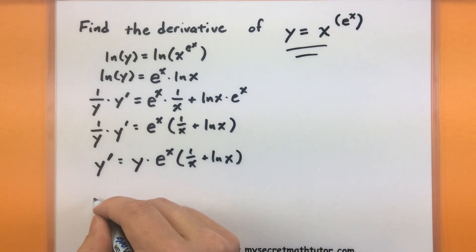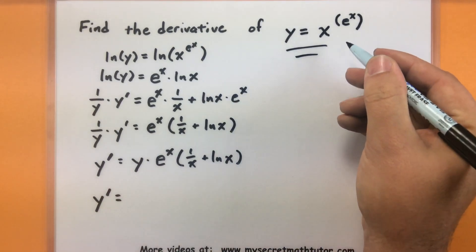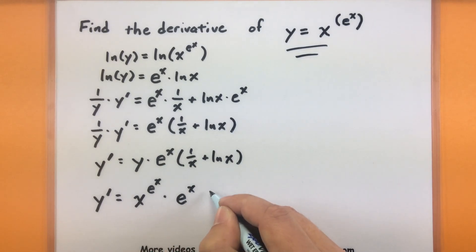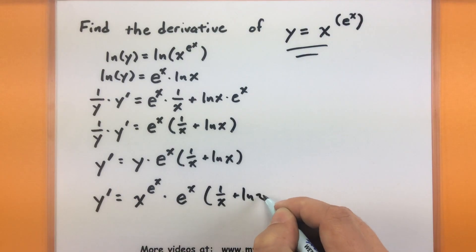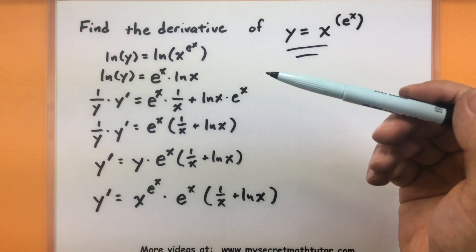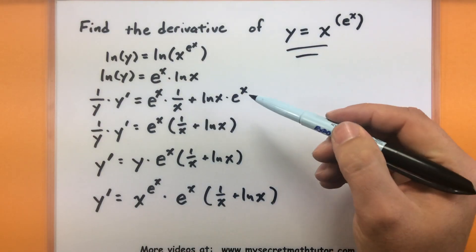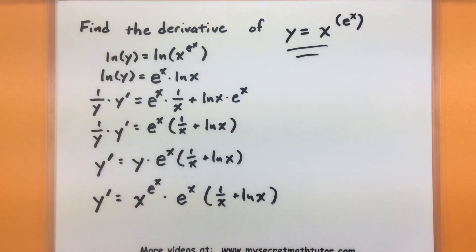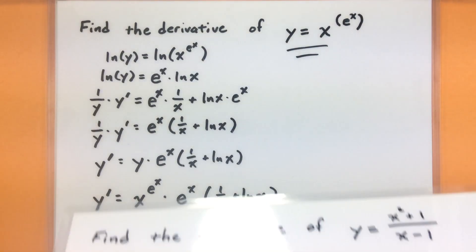So y prime equals, we'll go ahead and put our original function there, e to the power of e to the x, multiplied by e to the x, which is multiplied by 1 divided by x, plus natural log of x. So as you can see, there are some key components in here. You want to take your natural log, you want to take your derivatives very carefully, make sure you know your rules for those, isolate the y prime, and you will have your derivative. Let's give this one more try with a different function, just to show you that it works in a lot of other situations where you might not necessarily have an exponential function.